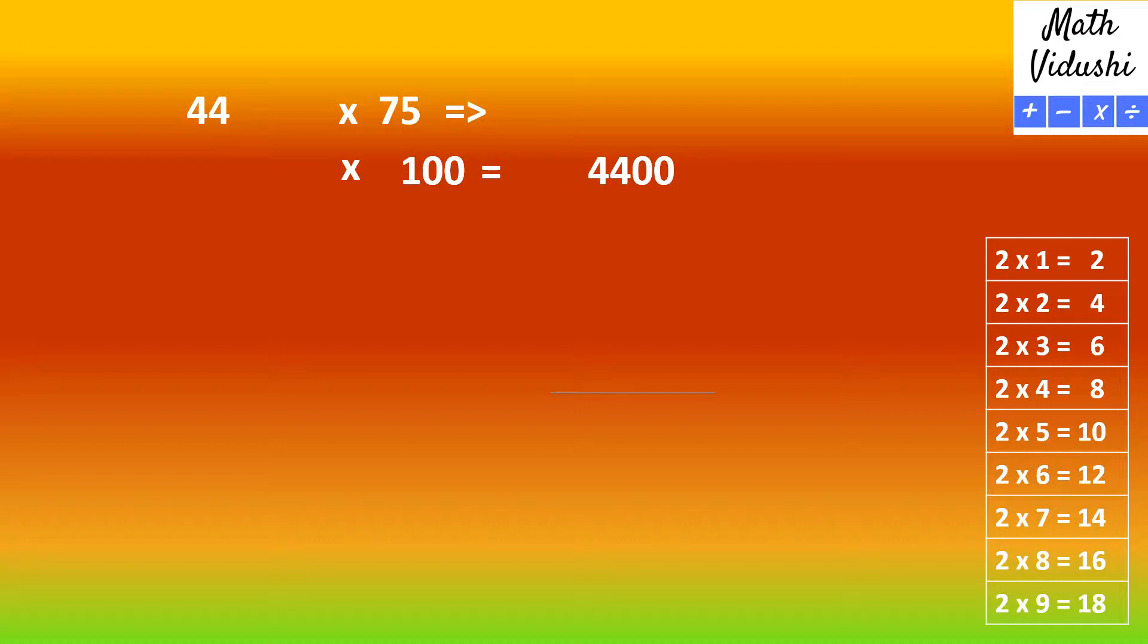Now you divide this answer by 2. So when you divide 4400 by 2, you would get 2200.